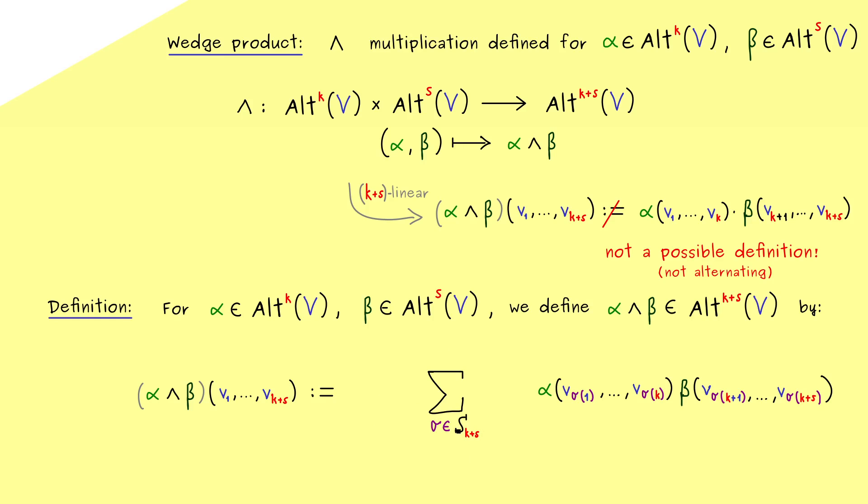So now with the sum here, we have included every possible order of the k+s vectors inside alpha and beta. And therefore, you could use the alternating fact of alpha and beta to reorder the inputs as you want.